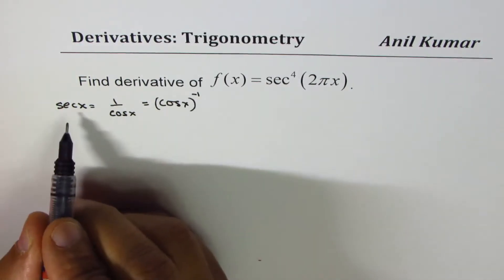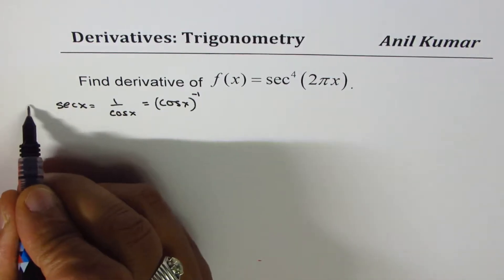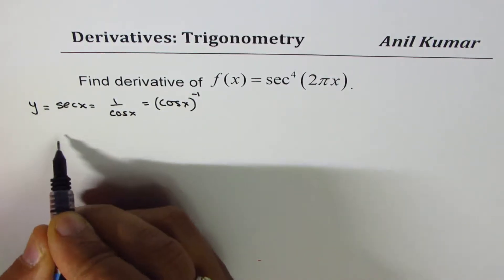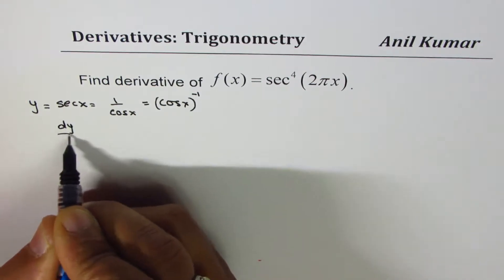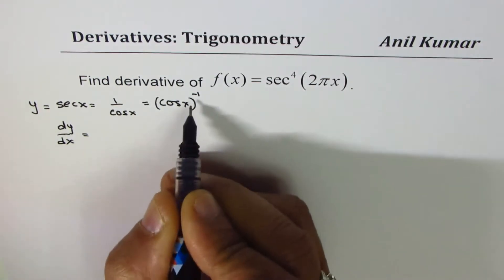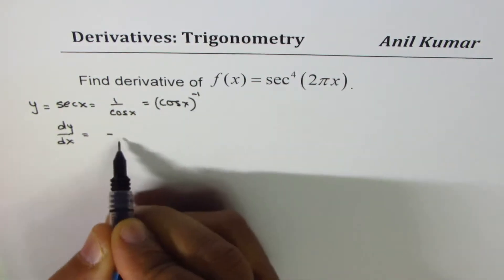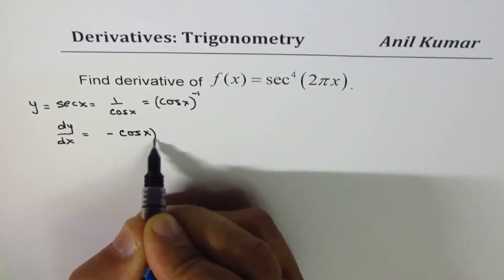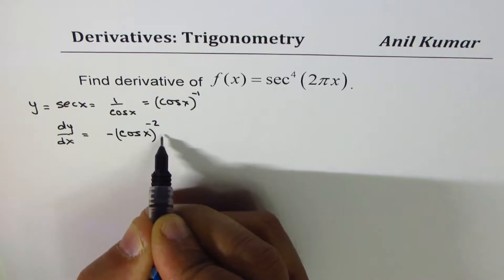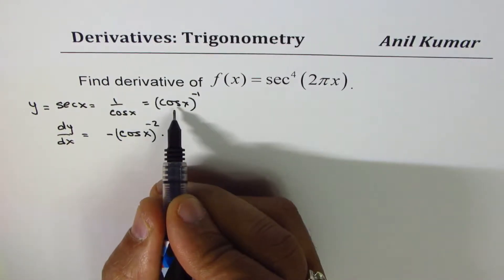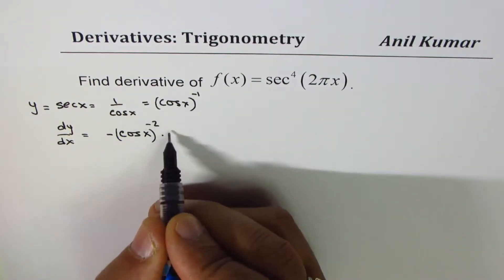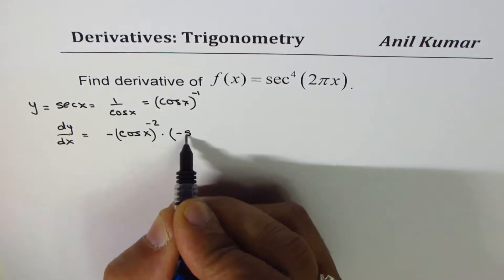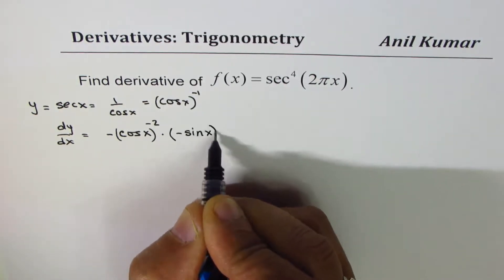Now what is the derivative of secant x? Let's say if y equals secant x, then dy/dx is equal to minus cos x to the power of minus 2 times the derivative of the inside function. So cos x derivative is minus sine x.